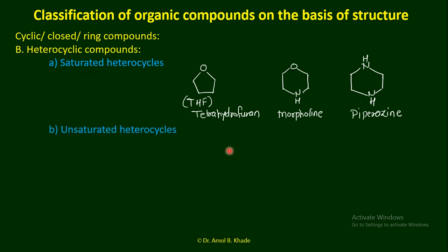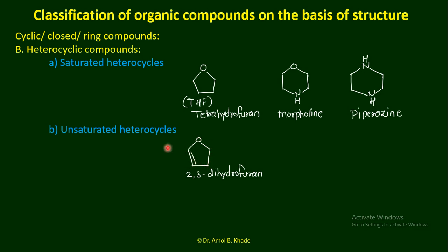Then we have unsaturated heterocycles where there is partial unsaturation — one or more double bonds are present in the ring. Comparing to THF, 2,3-dihydrofuran has one double bond, making it an unsaturated heterocyclic compound. We will see the nomenclature of these compounds in coming lectures.